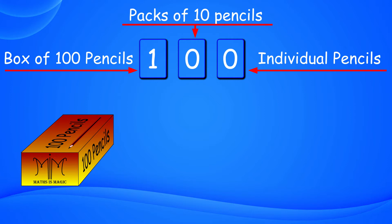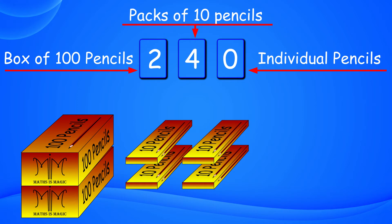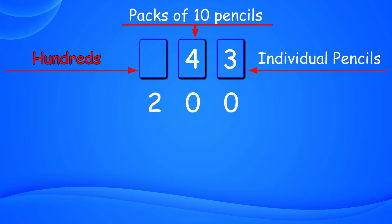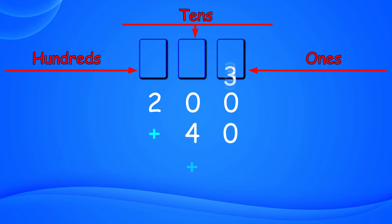Initially, we took the example of 243 pencils. We write 2 in the number box at the left, showing the quantity of boxes of 100 pencils. Write 4 in the middle box, showing the quantity of packs of 10 pencils. And in the right box, we write 3 as we have 3 individual pencils. Thus, 2 hundreds plus 4 tens plus 3 ones is written in simple way: 243.